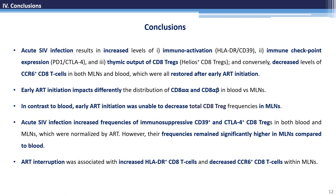We can conclude that acute SIV infection results in increased levels of immune activation, immune checkpoint expression, and thymic output of CD8 T-regs, and conversely decreased CCR6-positive CD8 T cells in both mesenteric lymph nodes and blood, which were all restored after early ART initiation. Early ART initiation impacts differently the distribution of CD8-alpha-alpha and CD8-alpha-beta in blood versus mesenteric lymph nodes. In contrast to blood, early ART initiation was unable to decrease total CD8 T-reg frequency in mesenteric lymph nodes. Acute SIV infection increased the frequency of immunosuppressive CD39-positive and CTLA-4-positive CD8 T-regs in both compartments, which were normalized by ART. However, their frequencies remained significantly higher in mesenteric lymph nodes compared to blood. ART interruption was associated with an increase in HLA-DR-positive CD8 T cells and a decrease in CCR6-positive CD8 T cells within the mesenteric lymph nodes.